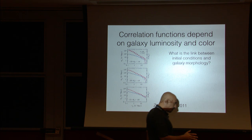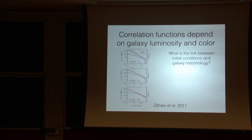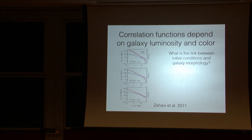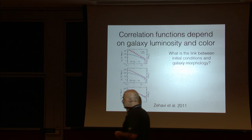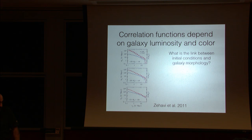The halo model assumes that halo mass determines everything — that's a good first step, because halo mass is the most important parameter. But we know other parameters like environment also matter. We need to become more sophisticated as we think about how we modify the tools we use, because the data is getting so much better. We need to be more sophisticated in how we talk about the relationship between halos and galaxies.